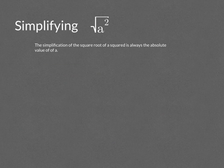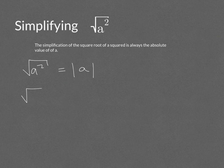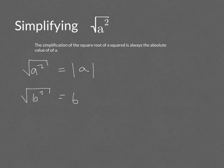When taking the square root of something squared, the simplification is always the absolute value of a. The square root of a squared always equals the absolute value of a. For example, the square root of 6 squared is 6 — the square root and the squared cancel each other out, similar to adding and then subtracting.